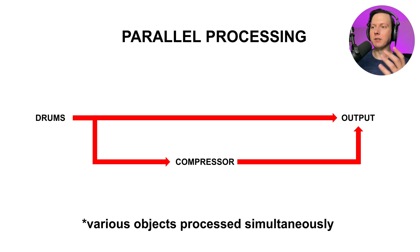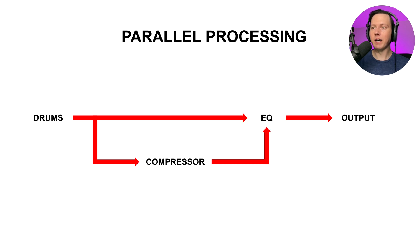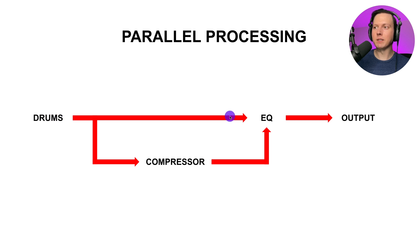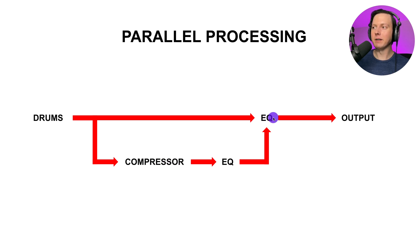There are so many other ways you are probably already using parallel processing without realizing it. For example, if you put reverb on your track and adjust the dry/wet knob, that is essentially parallel processing. Another way I like to use parallel processing is with saturation — instead of putting it onto your track and dirtying up the entire signal, you can take a parallel signal and blend in just that saturated sound to give some warmth to the original track or instrument.